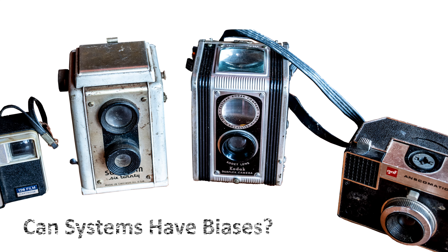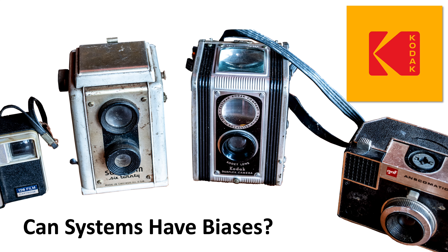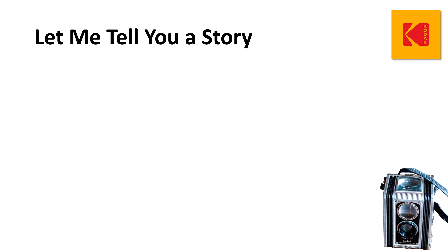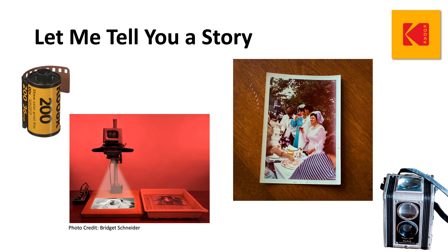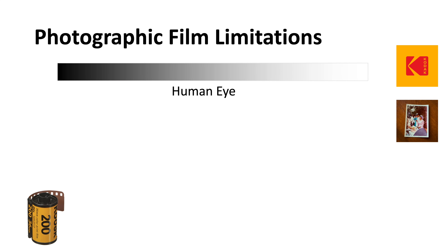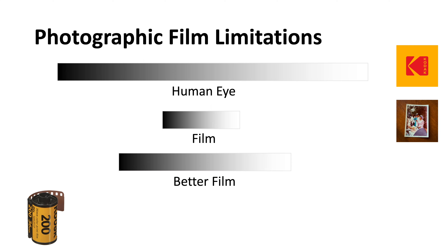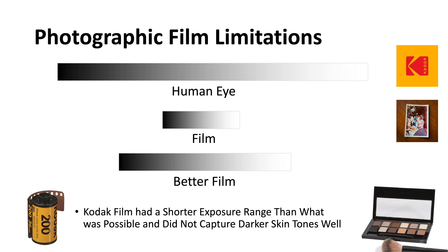A long time ago, cameras only used film, and there were biases in this system of developing photographs. Once we took the photos, we had to get them developed, and in that process — from taking the photo to printing — is where the biases existed. Photographic film is manufactured to a certain specification. In the case of Kodak film from the 50s and 60s, the specification was much smaller than what was possible to expose the light hitting the film. As a result, subjects with darker skin had less detail visible in the photos, simply because the specifications of the photographic film were not good enough.